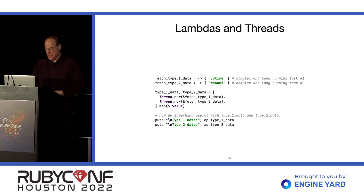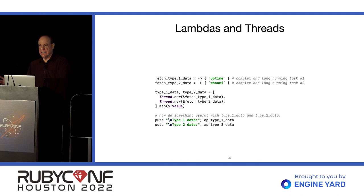Lambdas are handy for threads. When you create a thread and launch it, you pass it a code block. But using the ampersand, you can use a Lambda instead — and then you have all the power of Lambdas, including combining them and that kind of thing. That can be handy at times.